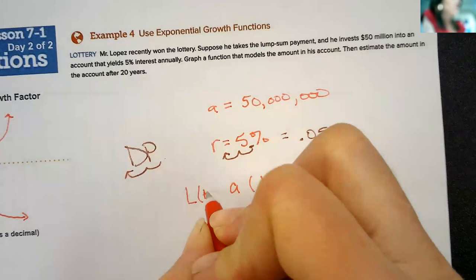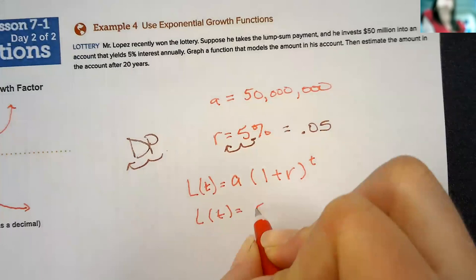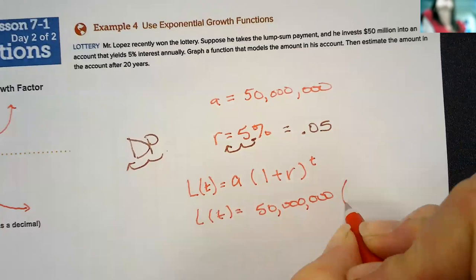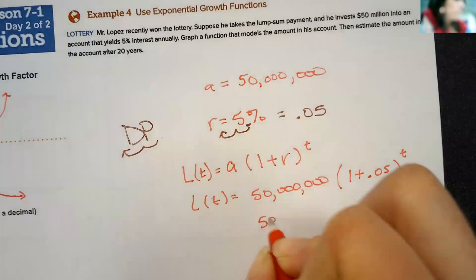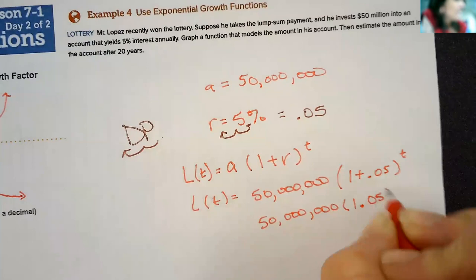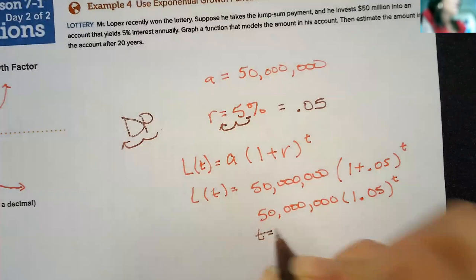Let me use L for lottery. L of T. We're talking about in terms of time, not X. So, L of T is going to equal 50 million times 1 plus 0.05 to the T. Now, we're going to write that as 50 million times 1.05 to the T, and we want to find if T equals 20 years.